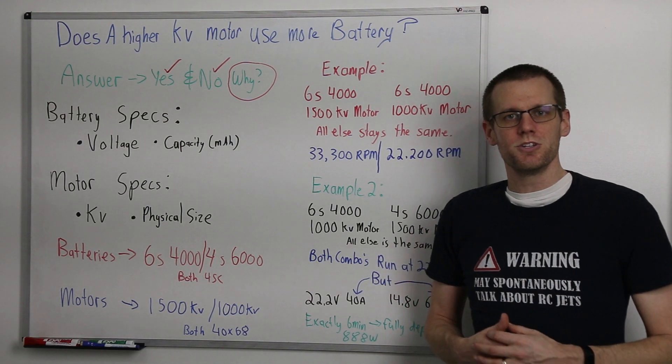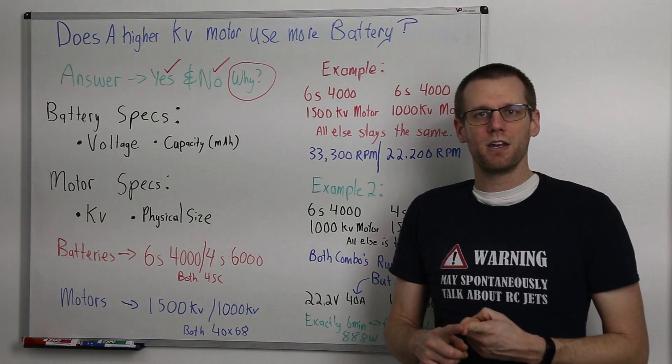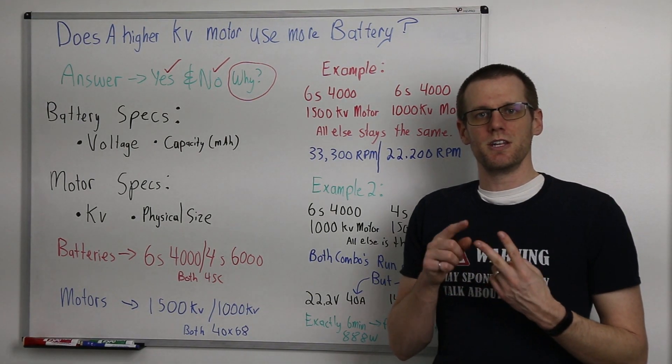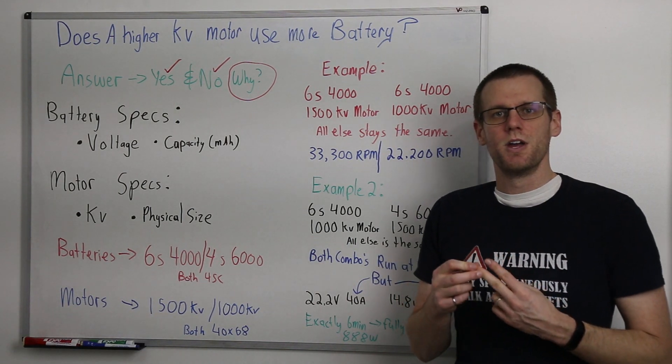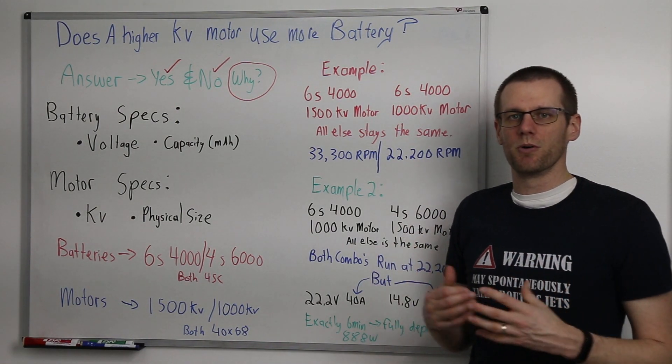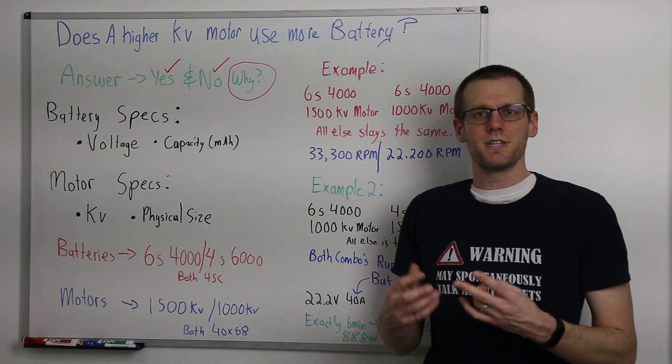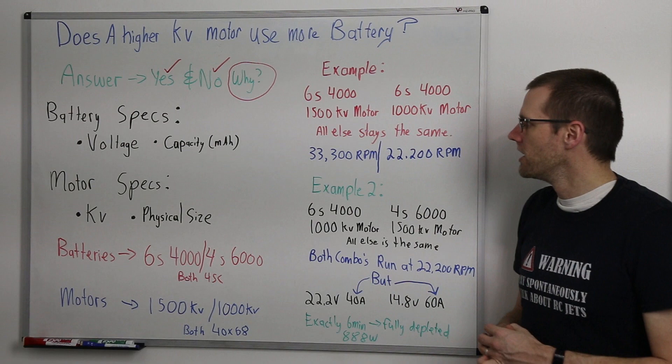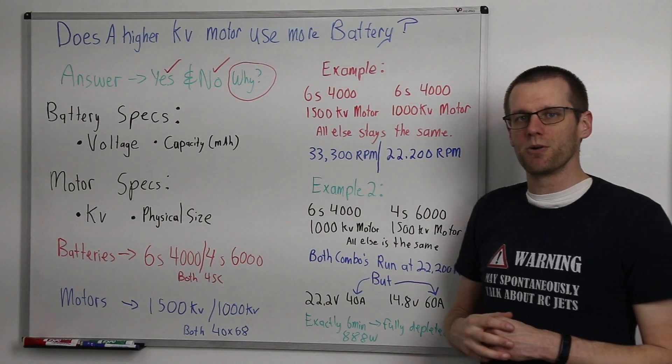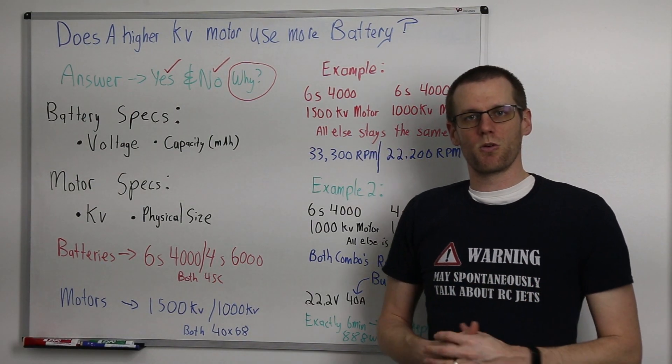Now there are limitations. Our motor has to be able to handle it. You have to make sure that you are not exceeding the current capabilities of the motor as well as the RPM limitations of the motor. So two critical things. And then of course your speed control and batteries have to be up for the challenge in order to deliver the amount of power here that we are going to require.